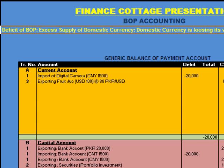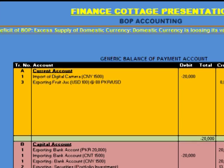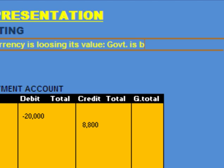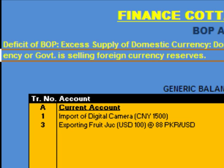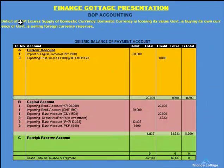It also means that the government is buying its own currency, or the government is selling foreign currency reserves. All these things represent the same idea — that is the deficit of balance of payment: excess supply of domestic currency, domestic currency losing its value, government buying its own currency or selling foreign currency reserves.